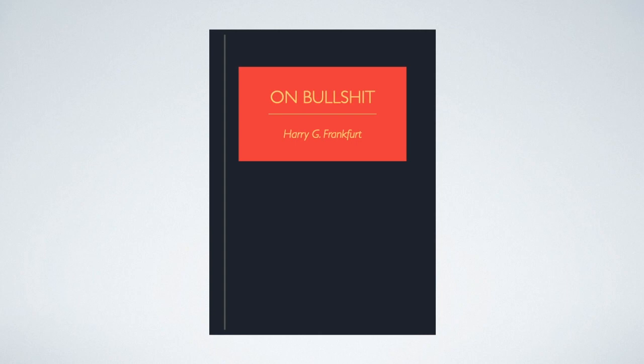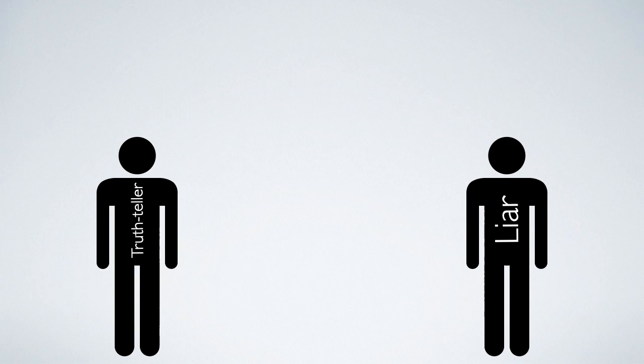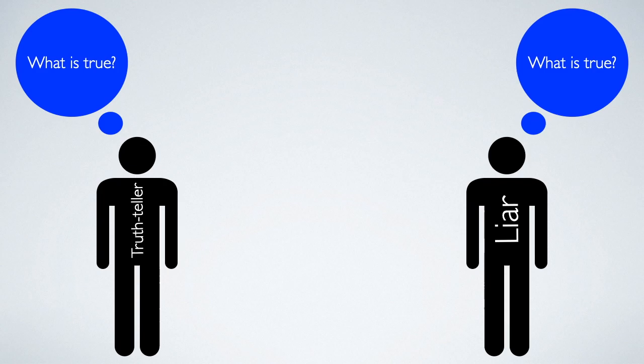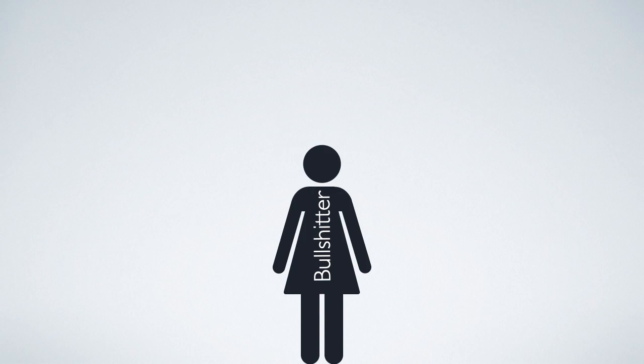Frankfurt points out that the truth teller and the liar have something in common: they both care about the truth. The truth teller cares about the truth because she wants to reveal it. And the liar cares about the truth because he wants to conceal it. But to achieve what they want, they both have to pay attention to what is true. Not so for the bullshitter, says Frankfurt. The bullshitter is not trying to reveal truth, but she's not trying to conceal it either. Truth just isn't on her radar.